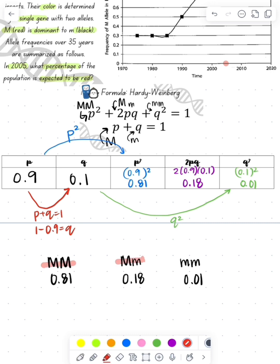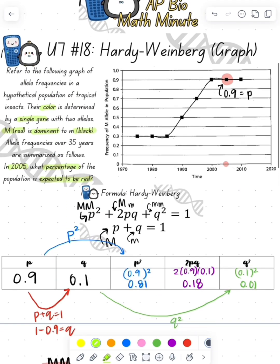Now the homozygous dominant, as well as the heterozygous, are both going to be red. So if I add these two together, I can find that the dominant phenotype is 0.99, but we want to write that in a percent, so that's 99%. Hope that this was helpful. Remember that AP Bio Payback was just assessed by y'all.